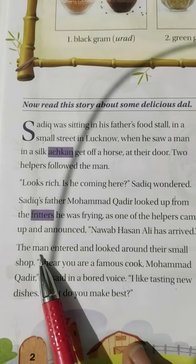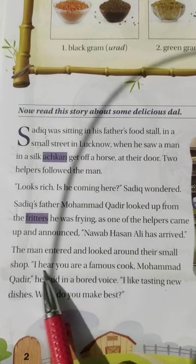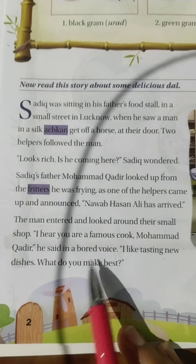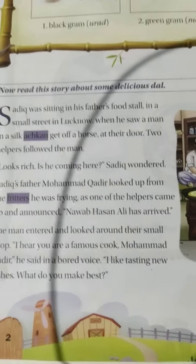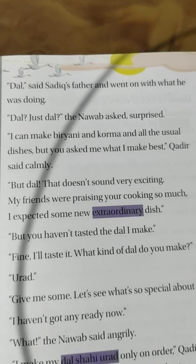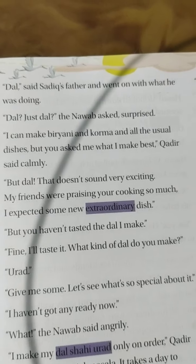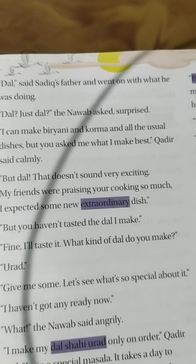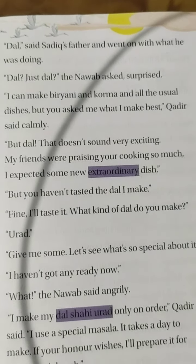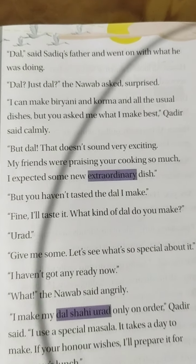The men entered and looked around their small shop. "I hear you are a famous cook, Muhammad Kwadar," he said in a bored voice. "I like tasting new dishes. What do you make best?" "Dal," said Sadiq's father, and went on with what he was doing. "Dal? Just dal?" the Nabab asked, surprised. "I can make biryani and korma and all the usual dishes. But you asked me what I make best," Father said calmly. Children, extraordinary means very special.